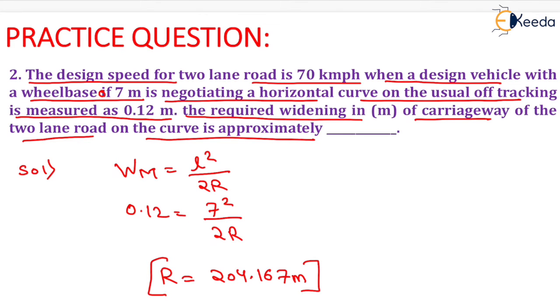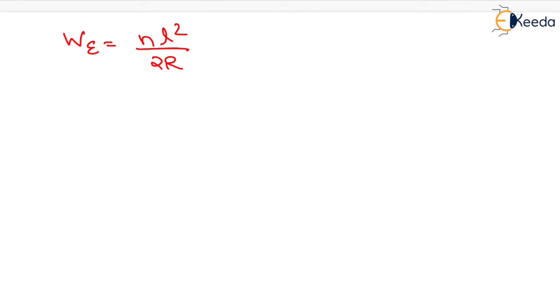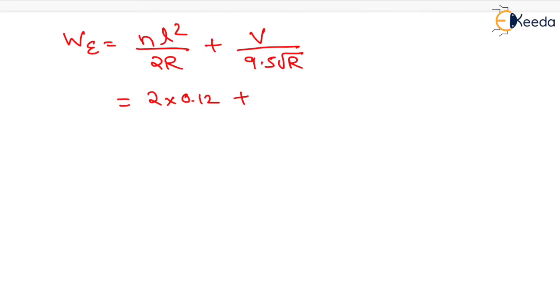Now, we need to calculate the value of extra widening, which equals NL squared upon 2R plus V upon 9.5 root R. Putting the value of N as 2, L squared upon 2R as 0.12, V as 70, and R as 204.167 — the value we computed in the previous step.